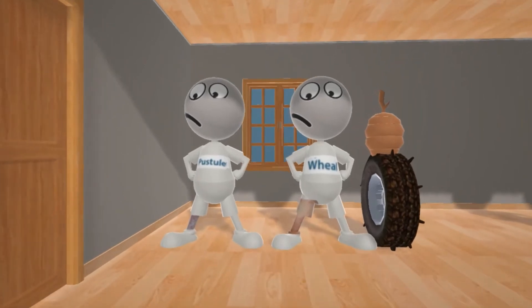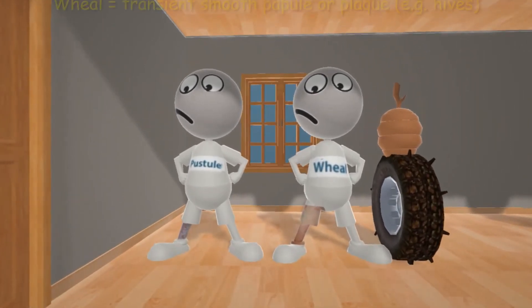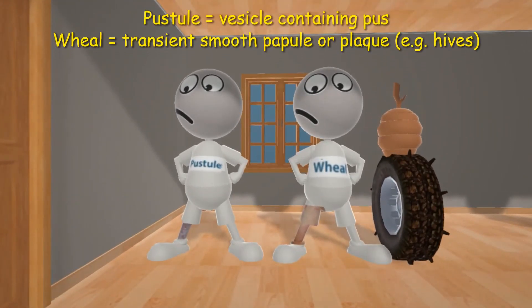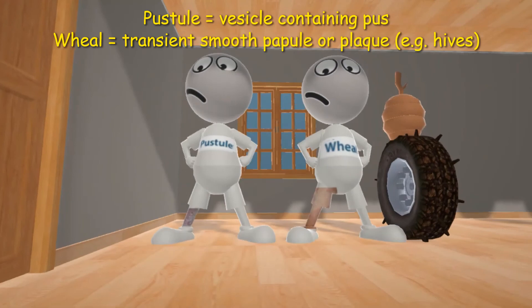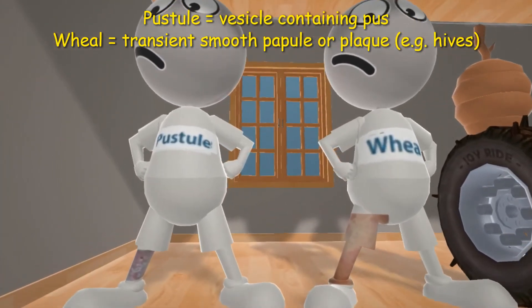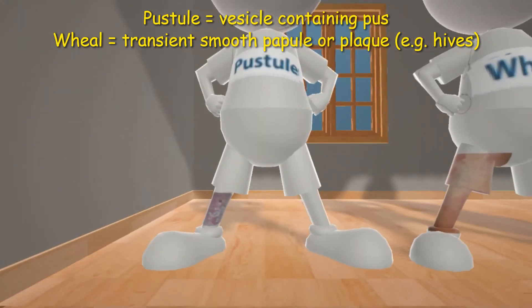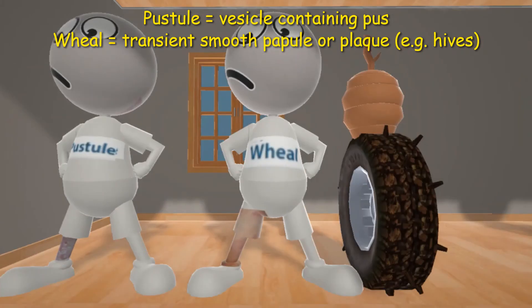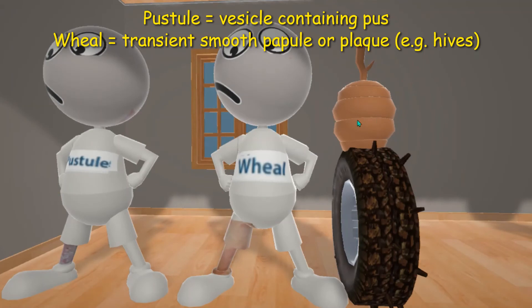On the lower floor we see pustule and wheal. A pustule is a vesicle containing pus — no mnemonic needed, since pustule sounds like pus. We see this guy with a pustule on his leg, a pus-containing lesion. A wheal, on the other hand, is a transient smooth papule or plaque; hives are such an example. We have a wheel with a hive on top of it to help remember that hives are an example of wheals.